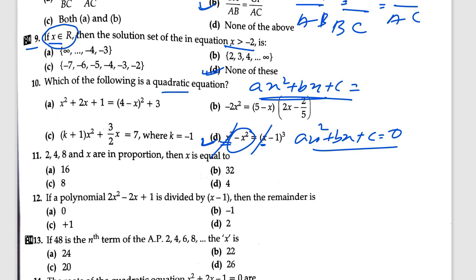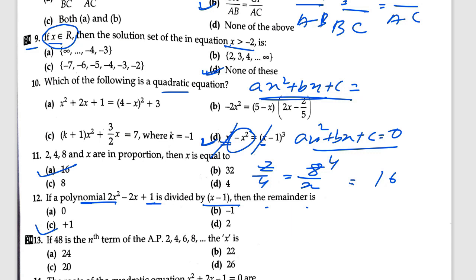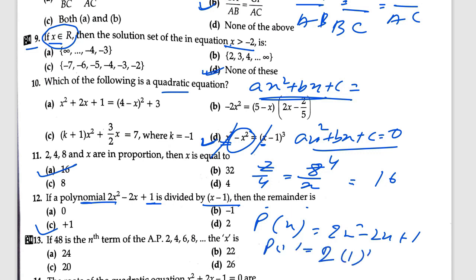For question 12, the value is 16 because 2 cuts to 4 giving 4, making 16. Question 13: the polynomial 2X squared minus 2X plus 1 divided by X minus 1, find the remainder. The correct option is C — you find P(1): substitute x equals 1, giving 2(1) squared minus 2(1) plus 1.